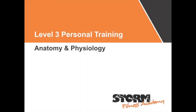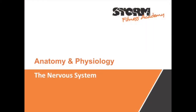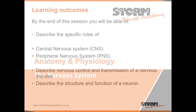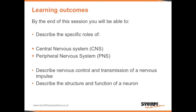Level 3 Personal Training Anatomy and Physiology — The Nervous System. By the end of this session you will be able to describe the specific roles of the central nervous system and the peripheral nervous system, describe nervous control and transmission of a nervous impulse, and describe the structure and function of a neuron.